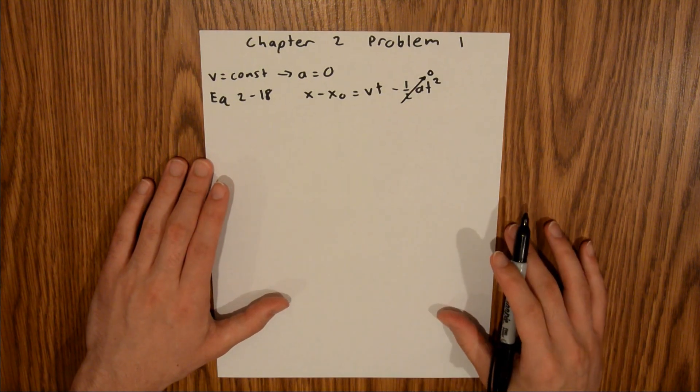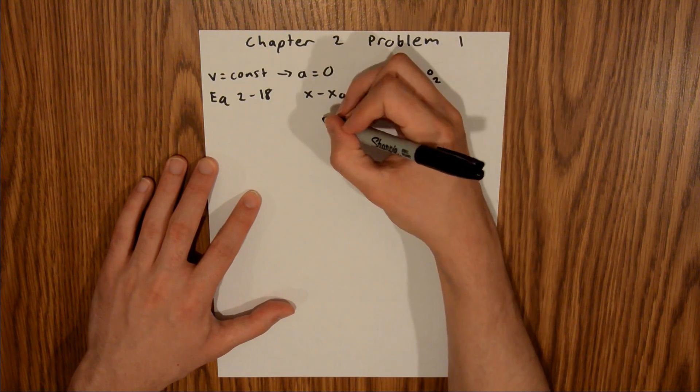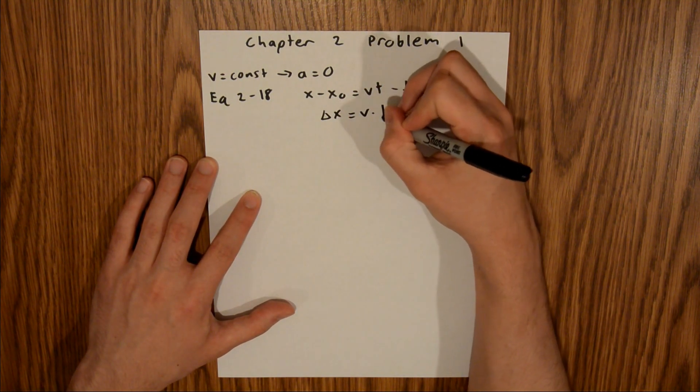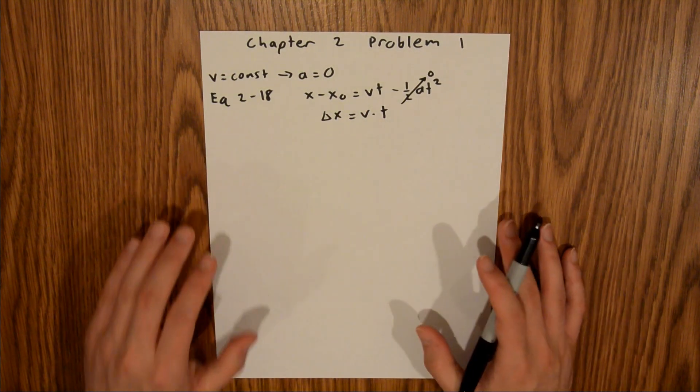And since we're asked to find how far, we can treat that as a displacement. So, this entire term right here just becomes delta x, and then that is equal to v times t. And we are given both v and t in the problem, so we can simply plug those in.